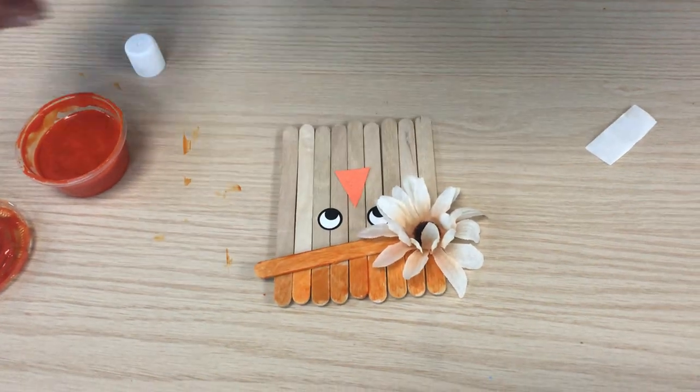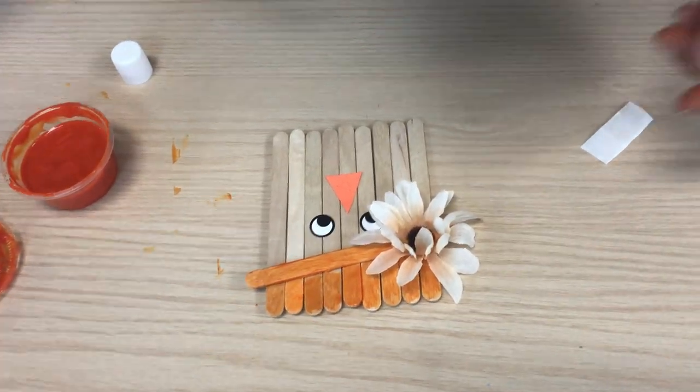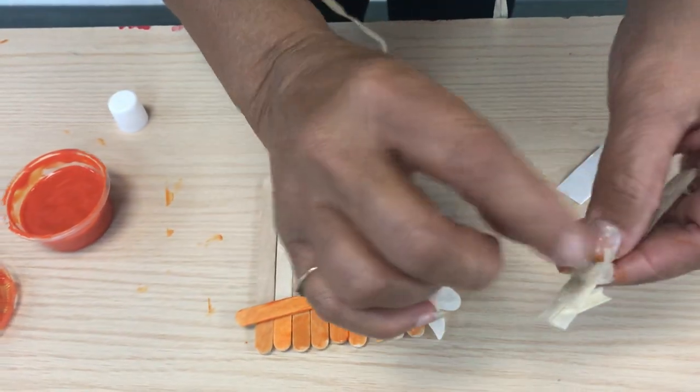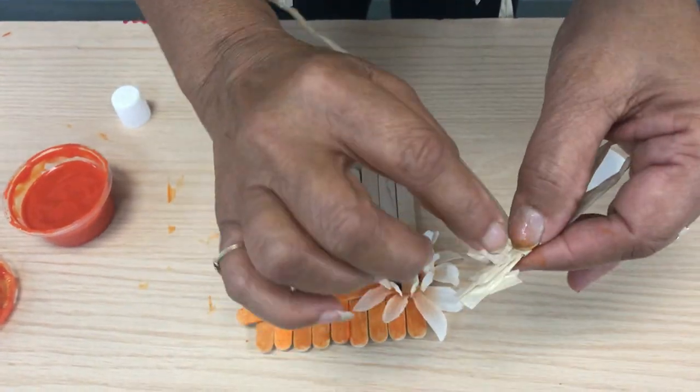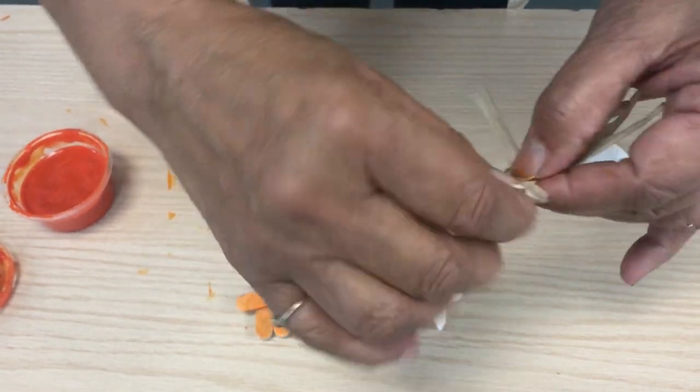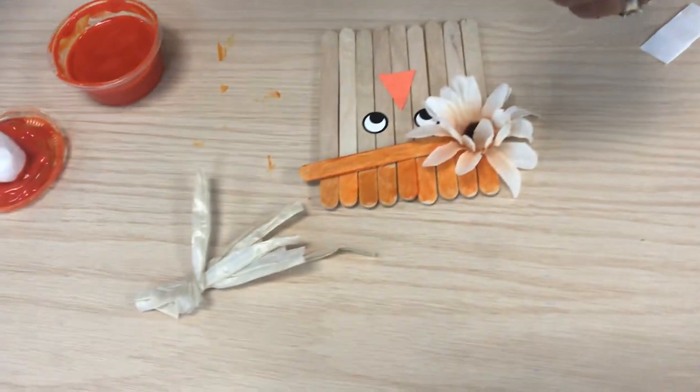And then you need some hair. I went ahead and I took a long piece of the hair and I put glue stick, I glued it, and I went ahead and turned and put some more glue so it can be like this.